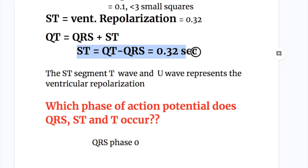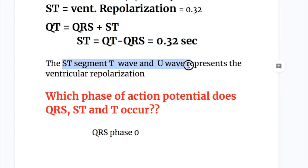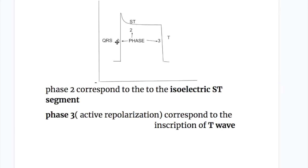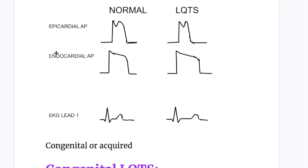The ST segment, T wave and U wave represent ventricular repolarization. Which phase of the action potential does QRS, ST and T occur? QRS occurs in phase 0, ST segment occurs on isoelectric phase 2, and phase 3 is inscription of the T wave. So phase 0 is QRS, phase 2 is ST segment at isoelectric line, and phase 3 is T wave.